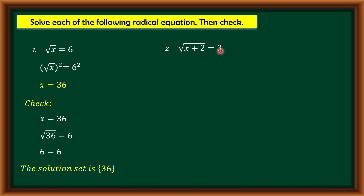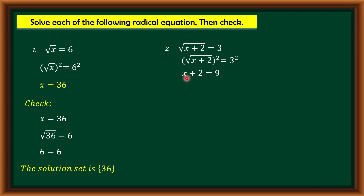Another example: square root of x plus 2 is equal to 3. We don't need to rearrange since the radical is already isolated. Raise both sides by 2: square root of x plus 2 raised to 2 equals 3 squared. By the law of radicals, we get x plus 2 is equal to 9. Using the addition property of equality, transpose positive 2 to the right side: x is equal to 9 minus 2, so x equals 7.